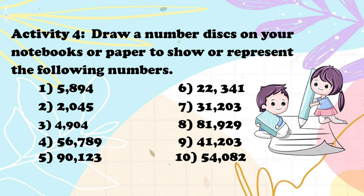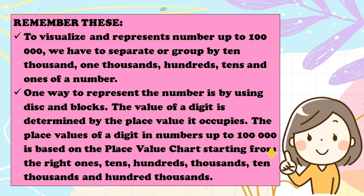Were you able to answer all the activities, children? If you answered yes — job well done! If you answered no, don't worry; you can study the lesson again and redo the activities. Remember: to visualize and represent numbers up to 100,000, we separate a number into groups by ten thousands, thousands, hundreds, tens, and ones. One way to represent a number is by using disks and blocks. The value of a digit is determined by the place value it occupies. The place values of digits in numbers up to 100,000, starting from the right, are: ones, tens, hundreds, thousands, ten thousands, and hundred thousands.